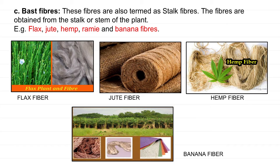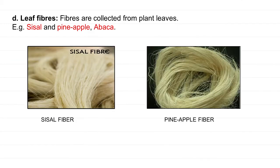This is a bast fiber, which includes flax, jute, hemp, and banana fiber — which comes from the stem. We remove the fiber from the stem and then make yarn from it. This is a leaf fiber, which includes sisal and pineapple fiber.